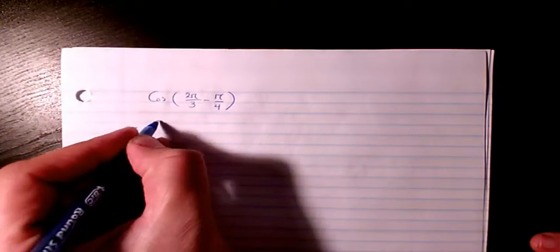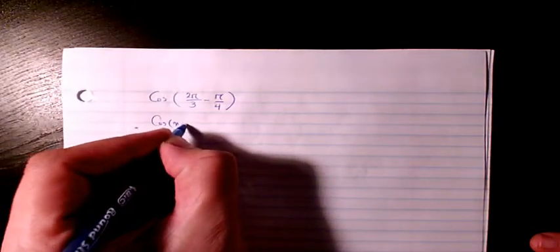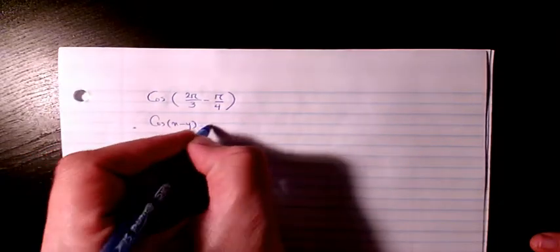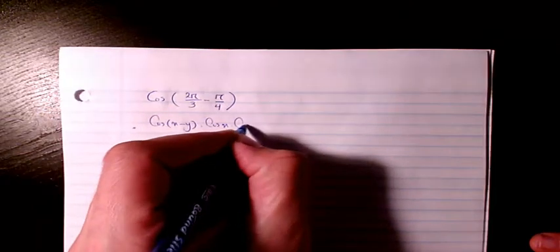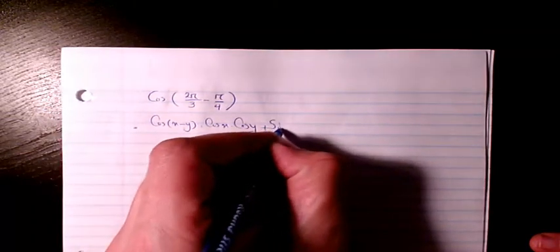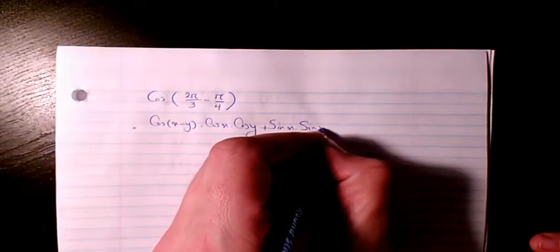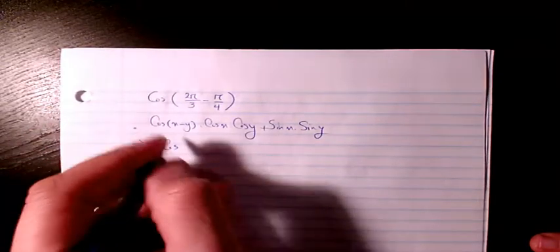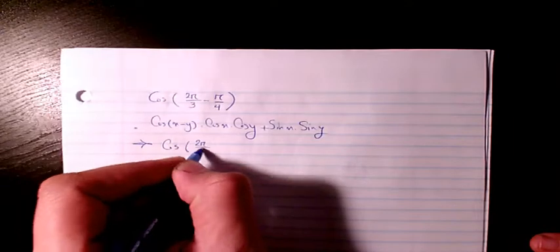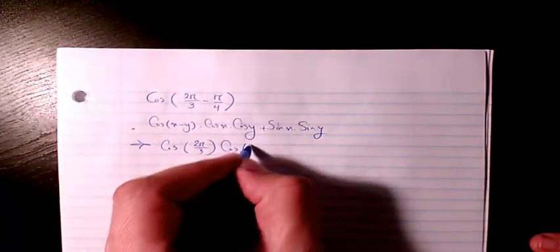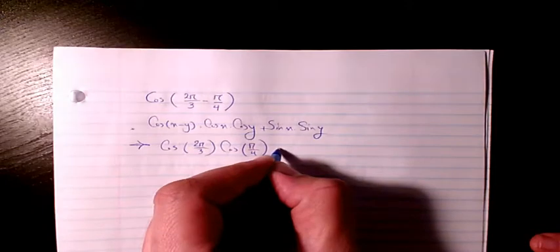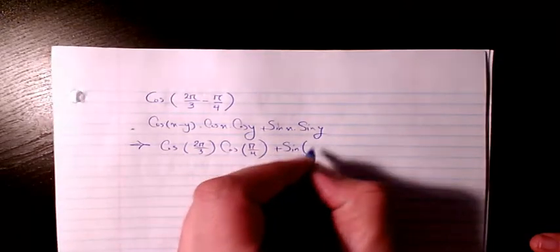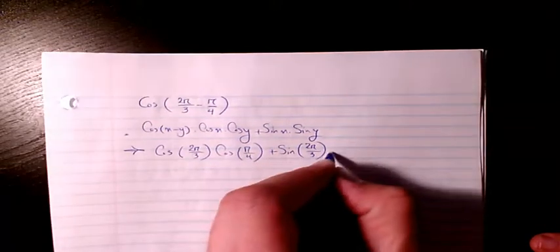So how do we do that? We know cosine x minus y may be equal to cosine x times cosine y plus sine x times sine y. So we would have cosine 2π over 3 times cosine π over 4 times sine 2π over 3 times